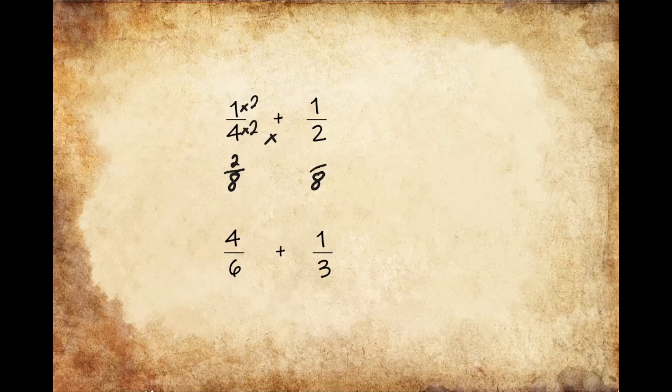And next we need to go ahead and convert the numerator in the second fraction. So in order for me to get 8, I needed to multiply 2 times 4. So I need to go ahead and multiply the numerator up top by 4 as well. And 1 times 4 gives us 4.